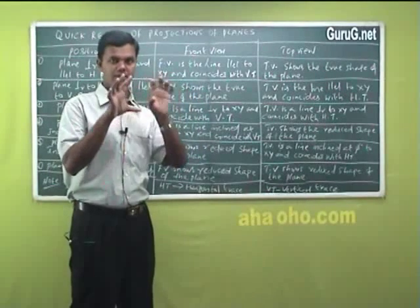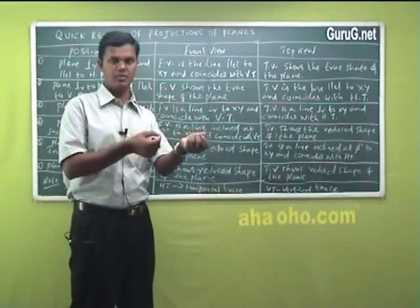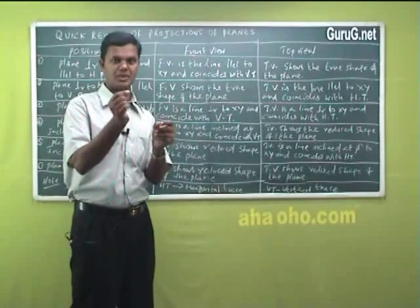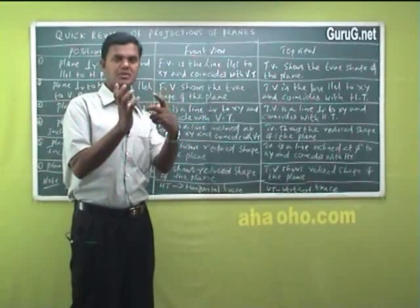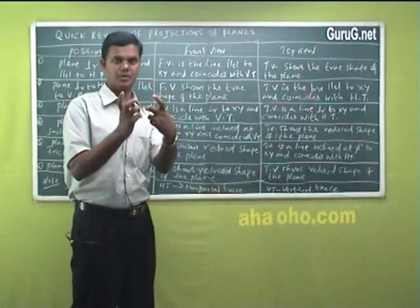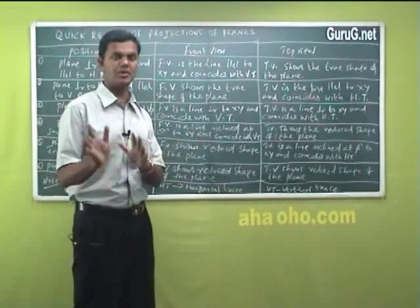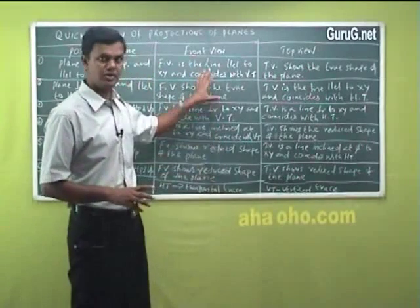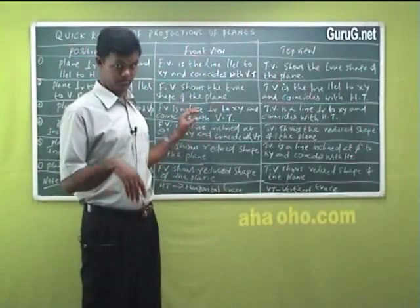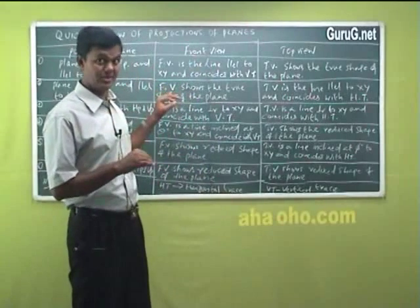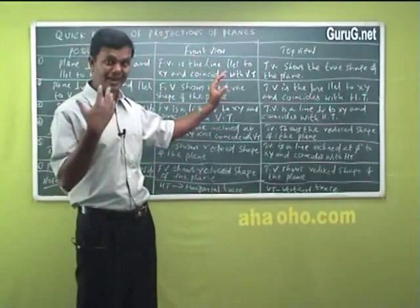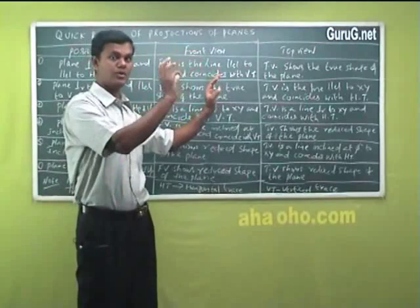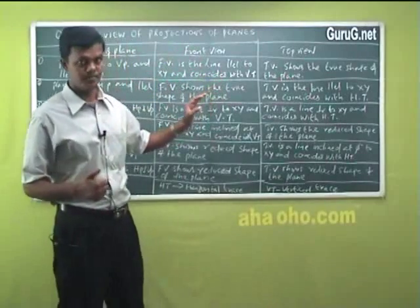If you have a rectangle, as shown in the problem, that is just without thickness. With thickness — with some solid shape — it becomes projection of solids, which is unit three. By understanding this, you can imagine how the sketch looks, how it looks in front view, and how it looks in top view.